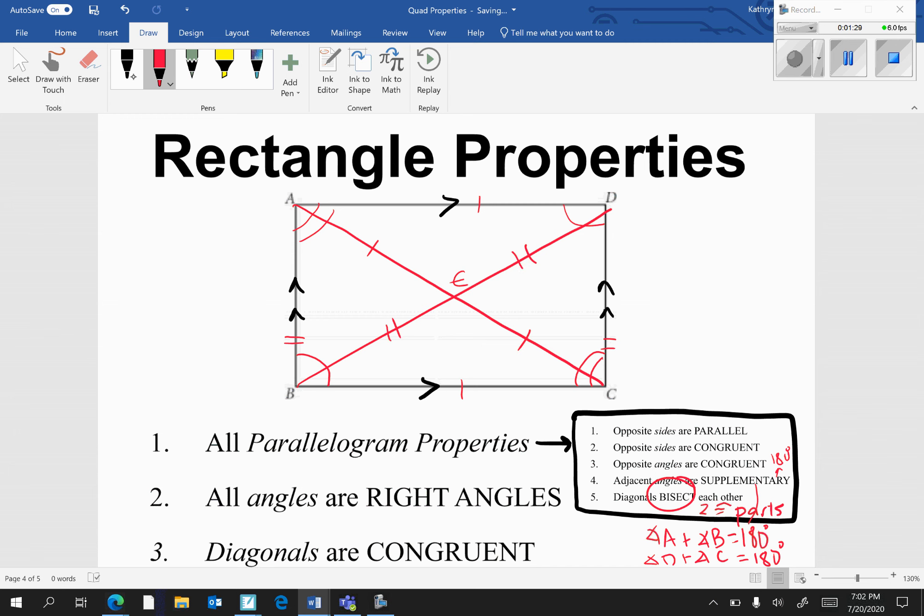Next, number two, all angles are right angles. Angle B is a right angle, angle A is a right angle, angle D is a right angle, and angle C is a right angle. This makes sense because angle A and angle B are adjacent angles that are supplementary, and they're 90 degrees. 90 plus 90 equals 180.